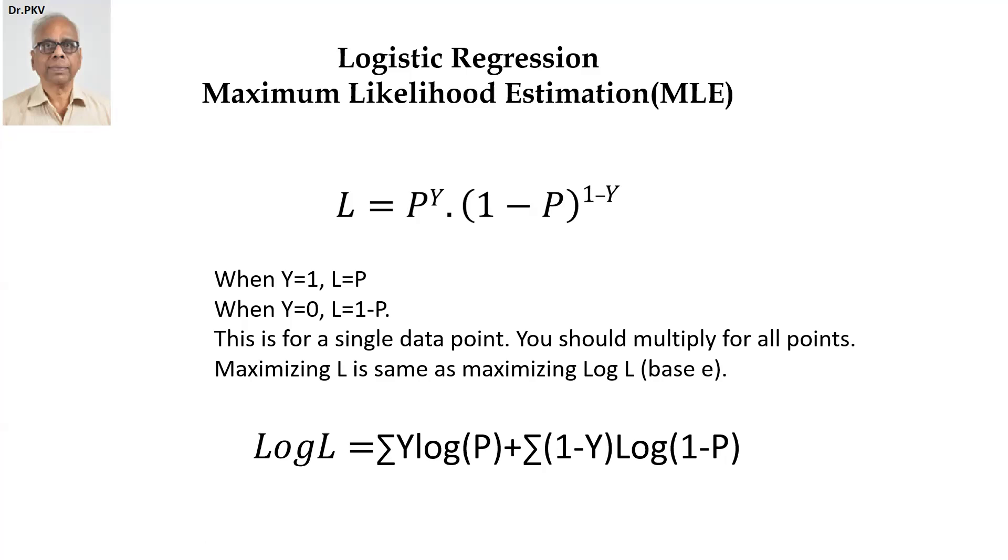And once you do the maximization procedure, the log likelihood maximization, the parameters B0, B1, B2, B3, etc., BK are automatically obtained.